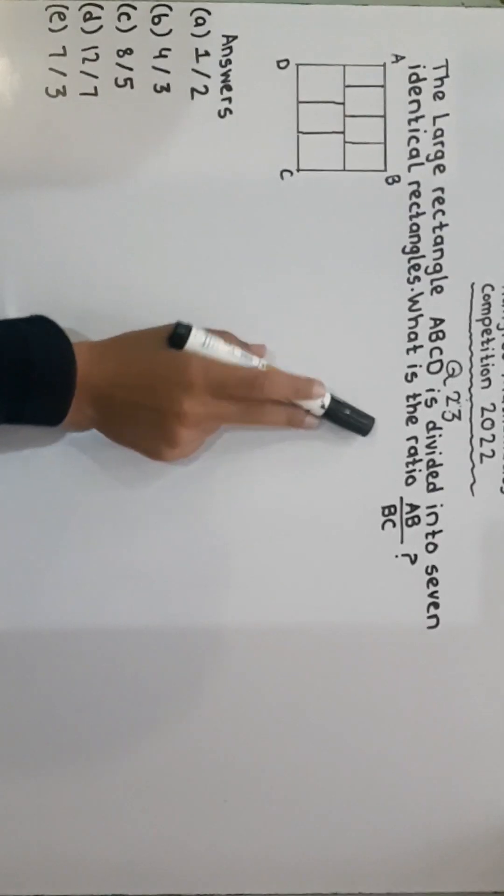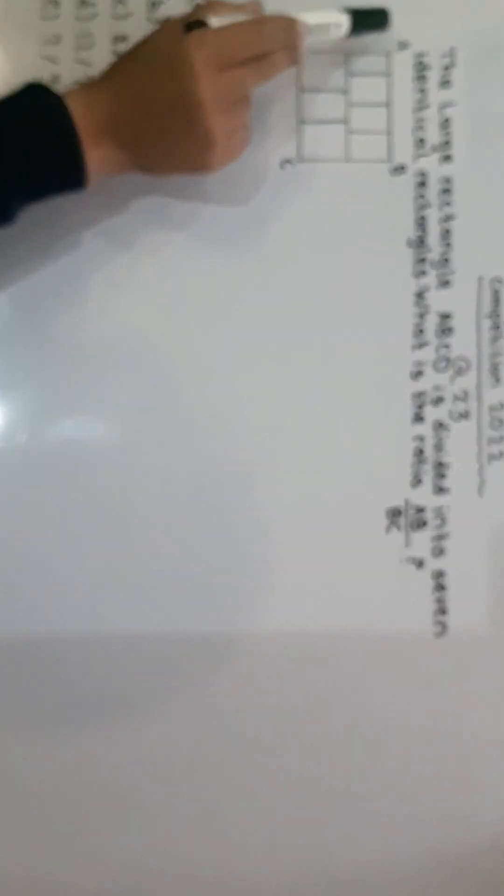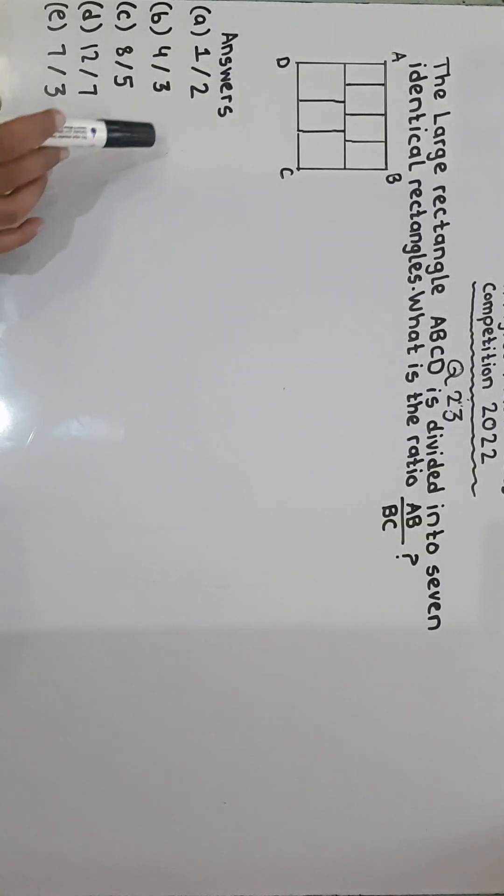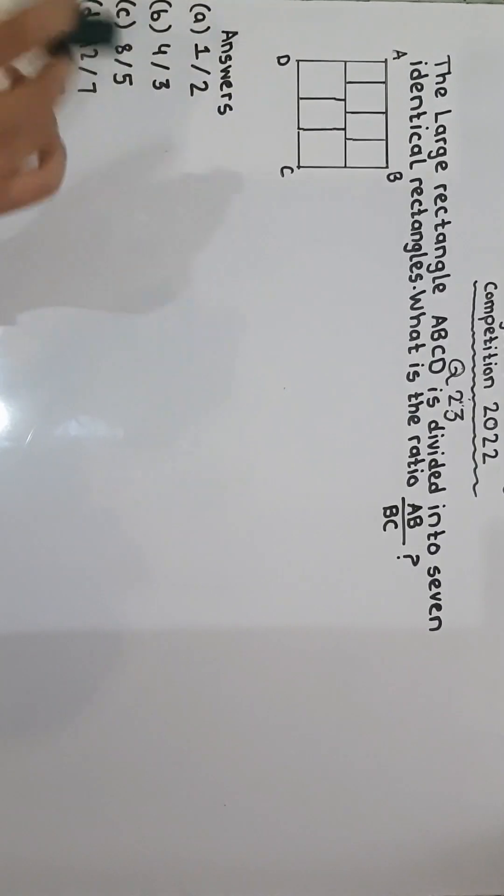What is the ratio AB divided by BC? They have given us 5 options of answers and we have to choose the correct one by solving it. Let's start to solve the question.